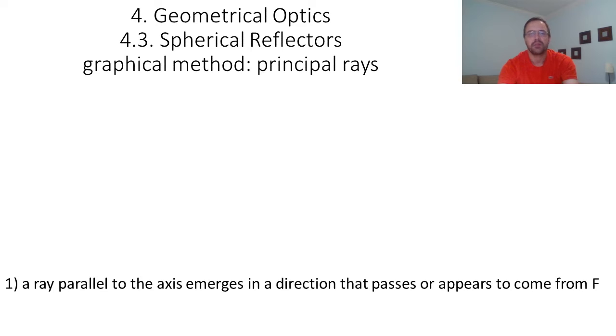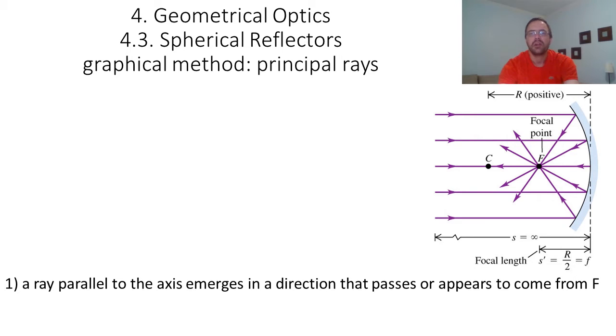The first principal rays are rays that are parallel to the optical axis. A ray parallel to the axis emerges in a direction that passes or appears to come from the focal point f. If you have a spherical mirror, the center of curvature is represented by point c, and since the focal length is r/2, the focal point f is located at r/2, exactly between the center of curvature c and the mirror.